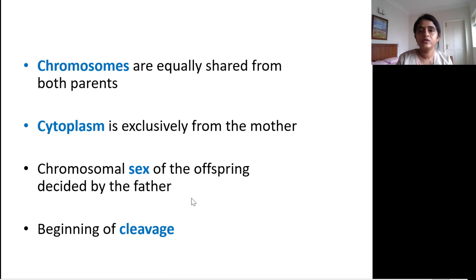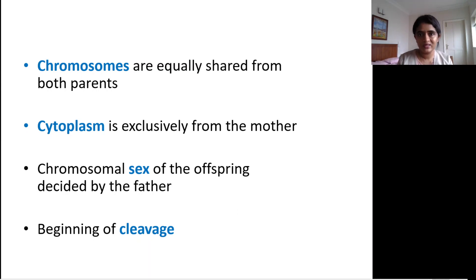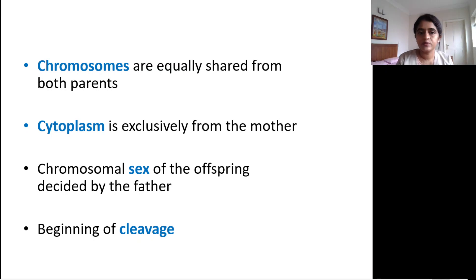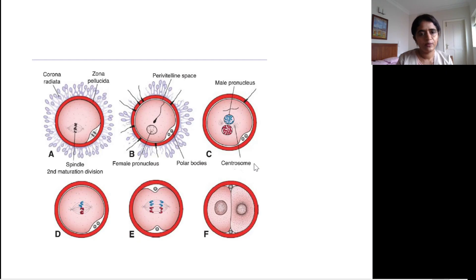The chromosomal sex of the offspring is decided by the father. The sperm has two options: 22 plus X or 22 plus Y, whereas the ovum has only one option: 22 plus X. Since the Y component must come from the sperm, the father determines the chromosomal sex of the offspring. Following fertilization, the cleavage division begins.